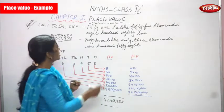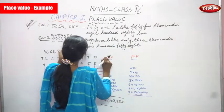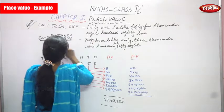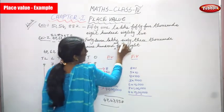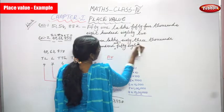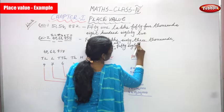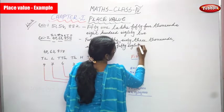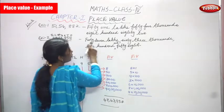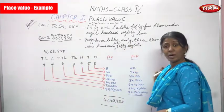Now how to write the number name: forty-seven lakhs, sixty-three thousand, nine hundred and fifty-eight. You can put a comma after the lakhs period, after the thousands period, and after the hundreds period. Finally put a full stop. So: forty-seven lakhs, sixty-three thousand, nine hundred and fifty-eight.